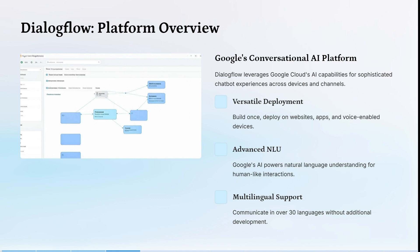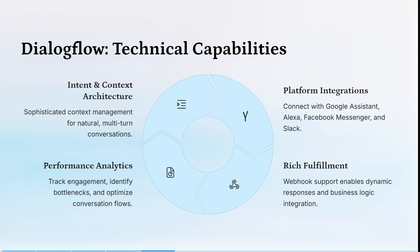Let's have a look at Dialogflow. Dialogflow leverages Google Cloud's AI capabilities for more sophisticated chatbot experiences across all devices and channels. It has a very versatile deployment system — you build once and deploy on websites, apps, and voice-enabled devices. It uses Google AI's powered natural language understanding for more human-like interactions, and you can communicate in over 30 languages without additional development. Its intent and context architecture is very sophisticated for natural multi-turn conversations, and you can track engagement with their performance analytics, identify bottlenecks, and optimize conversation flows.